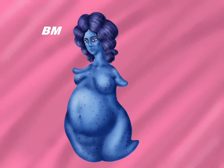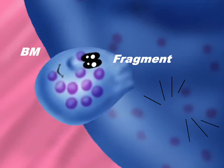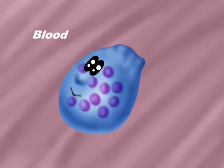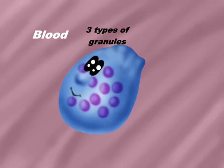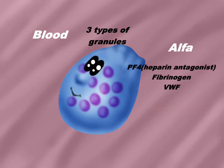From the megakaryocyte in the bone marrow, platelets come out as fragments and go into the blood. Platelets are very small and contain three types of granules: alpha granules, electron dense granules, and lysosomes.